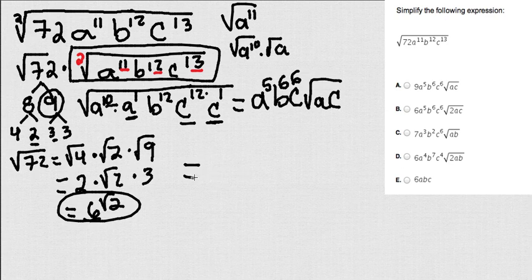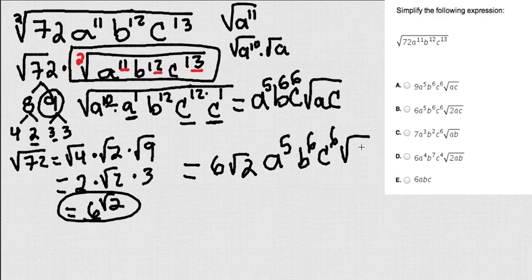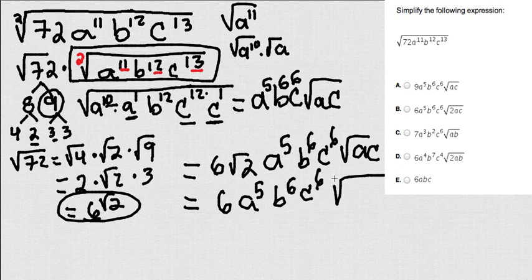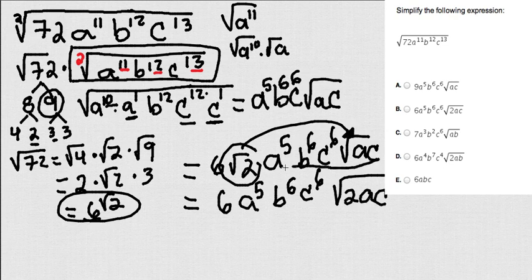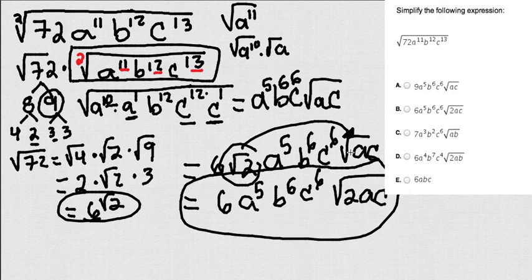So my final answer is gonna be 6 square root of 2. And then a to the 5, b to the 6, c to the 6. And then I have the square root of ac. So I just put my letters and my numbers that are free out of the radical. And finally, this 2, I'm gonna put it also with the radical. So this is 2ac. And that is all.